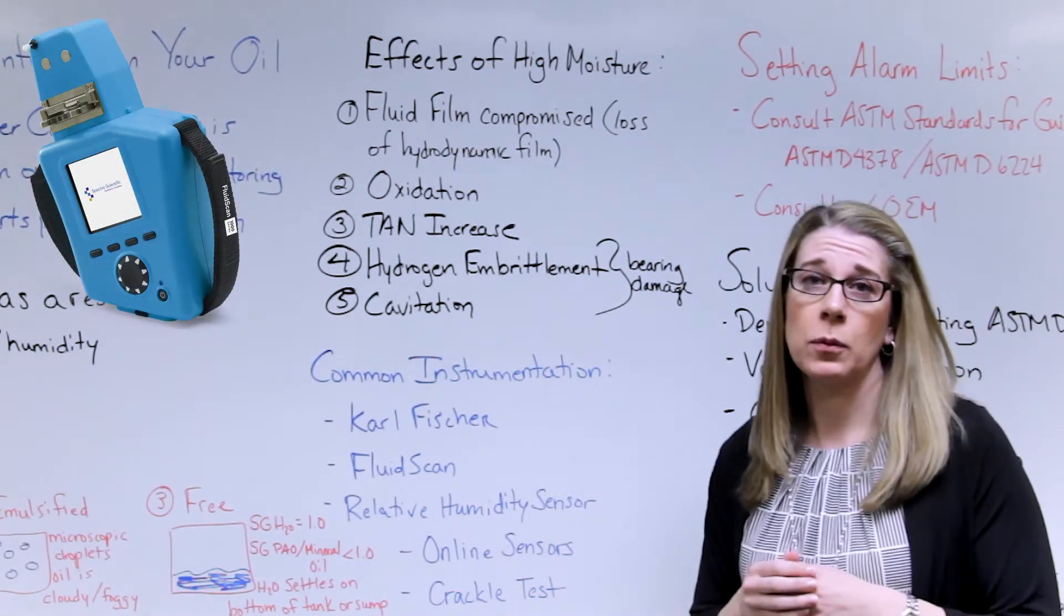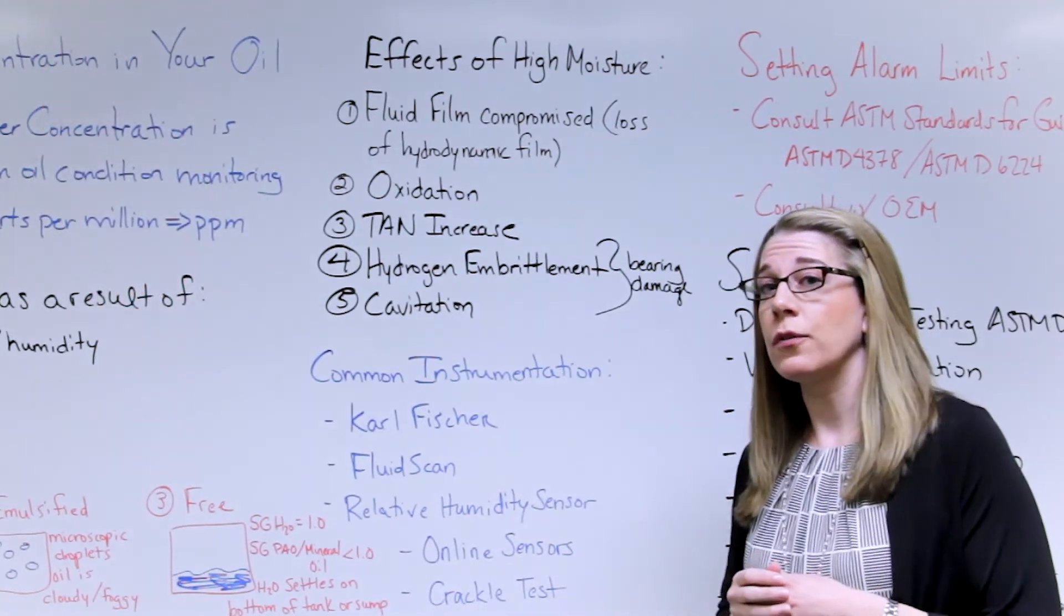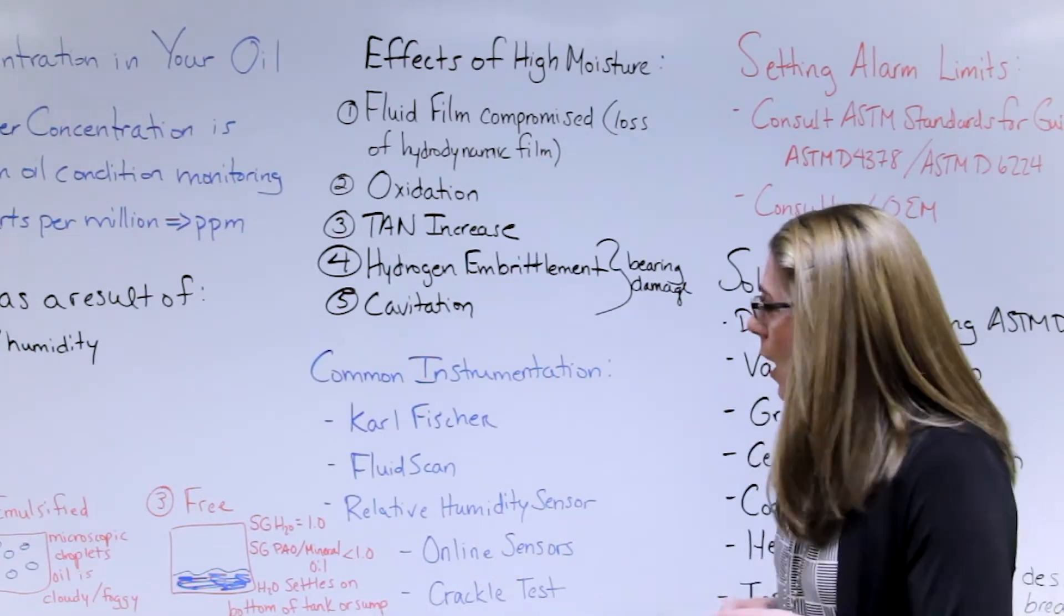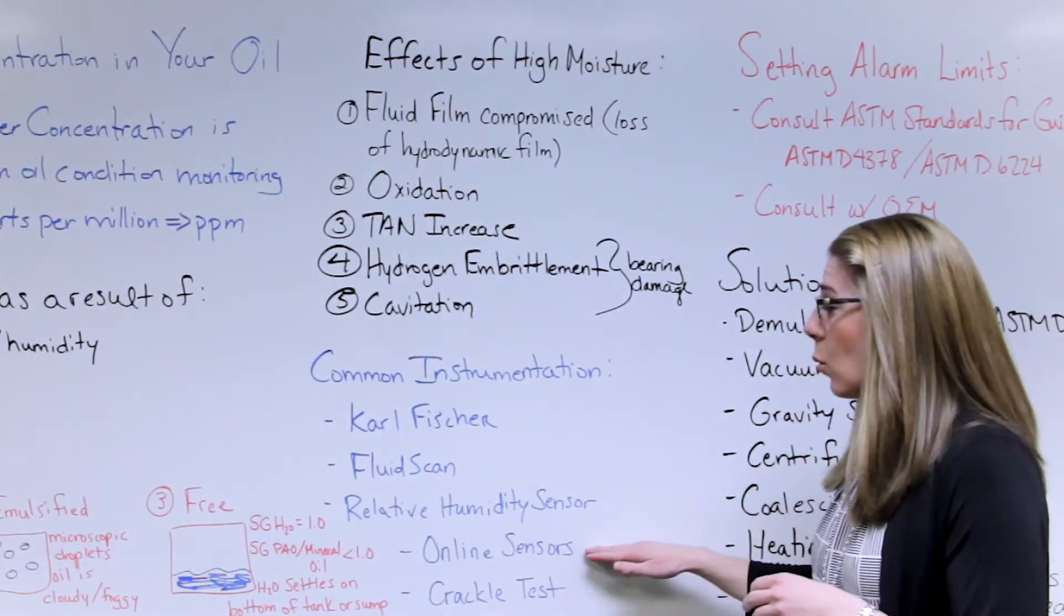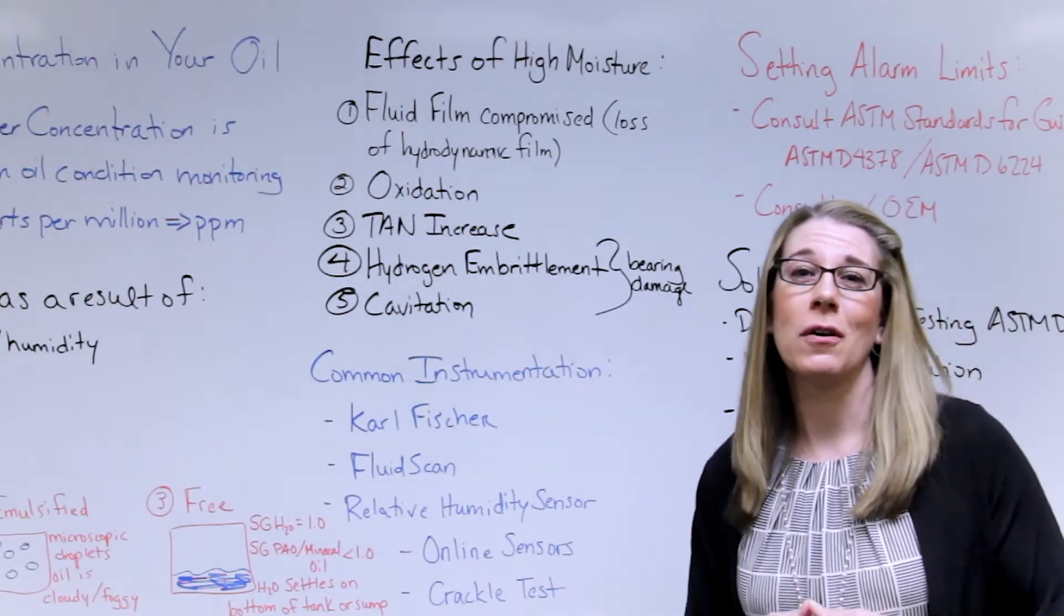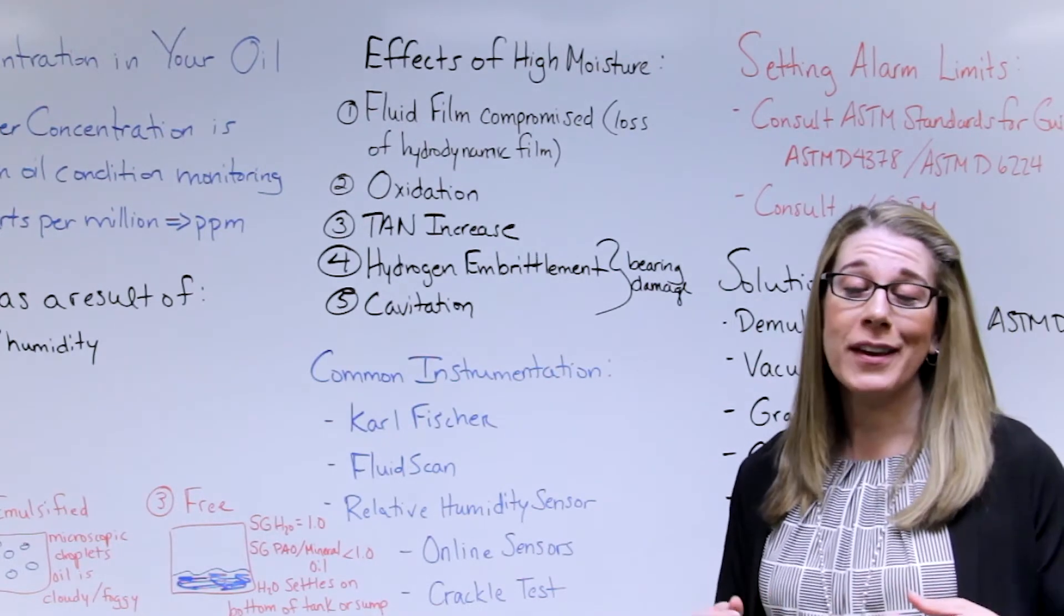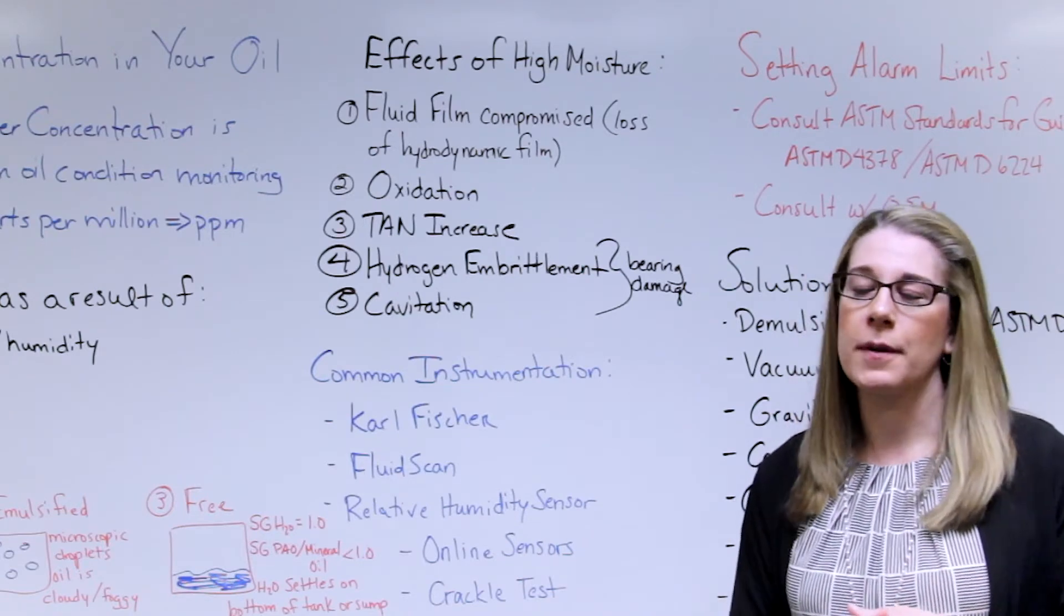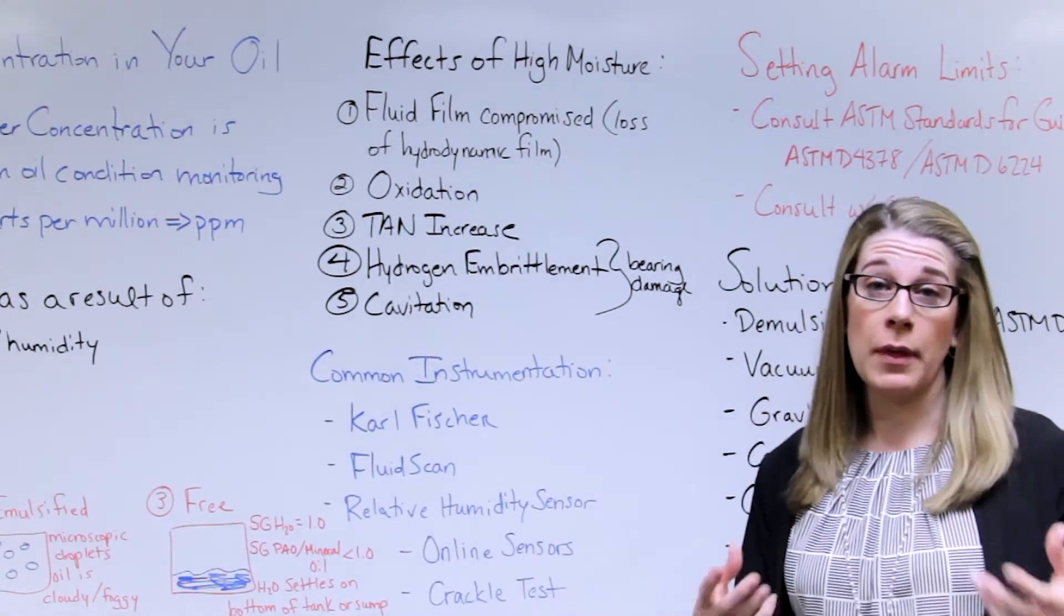Then we have the FluidScan device, which is part of our MiniLab system here at Spectro. This is an IR device which also measures parts per million and can be related back to the Carl Fisher method as well. I'm sure most of you have also heard that there are relative humidity sensors available. There's also online sensor technology. And then finally there's a very down-and-dirty method, if you will, of the crackle test. The crackle test is simply just dropping some oil on a hot plate, and you see how much it fizzes, and then you can correlate that to a parts per million. That's a pretty broad methodology. There's definitely some limitations with that, but in a pinch that works as well.